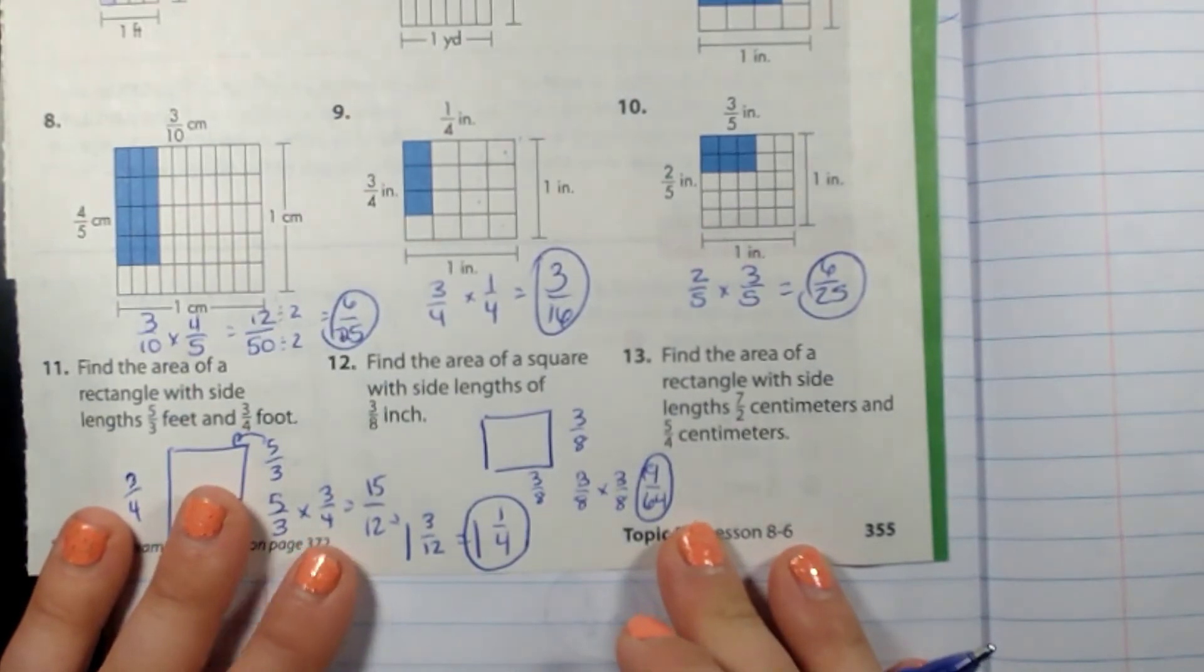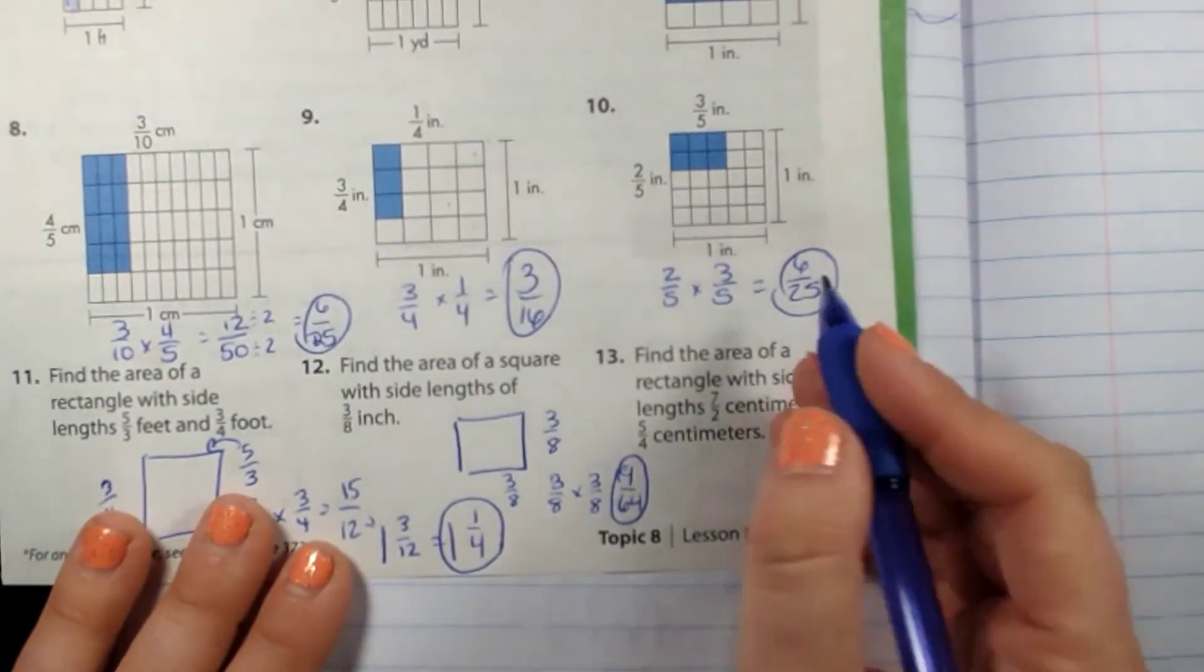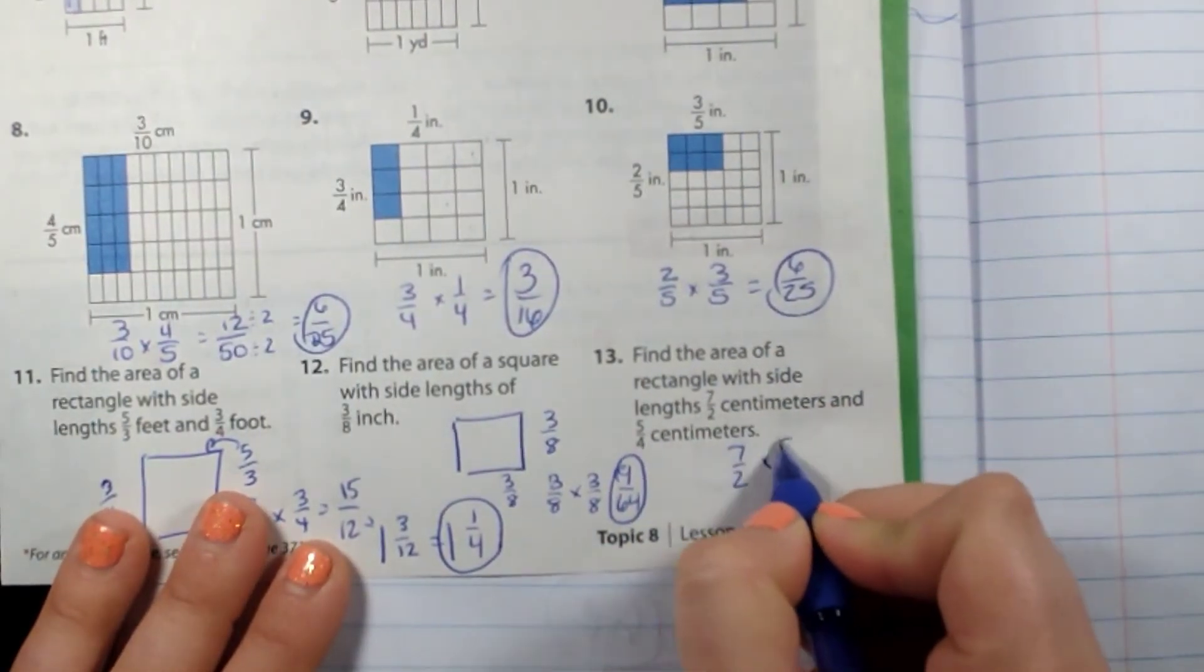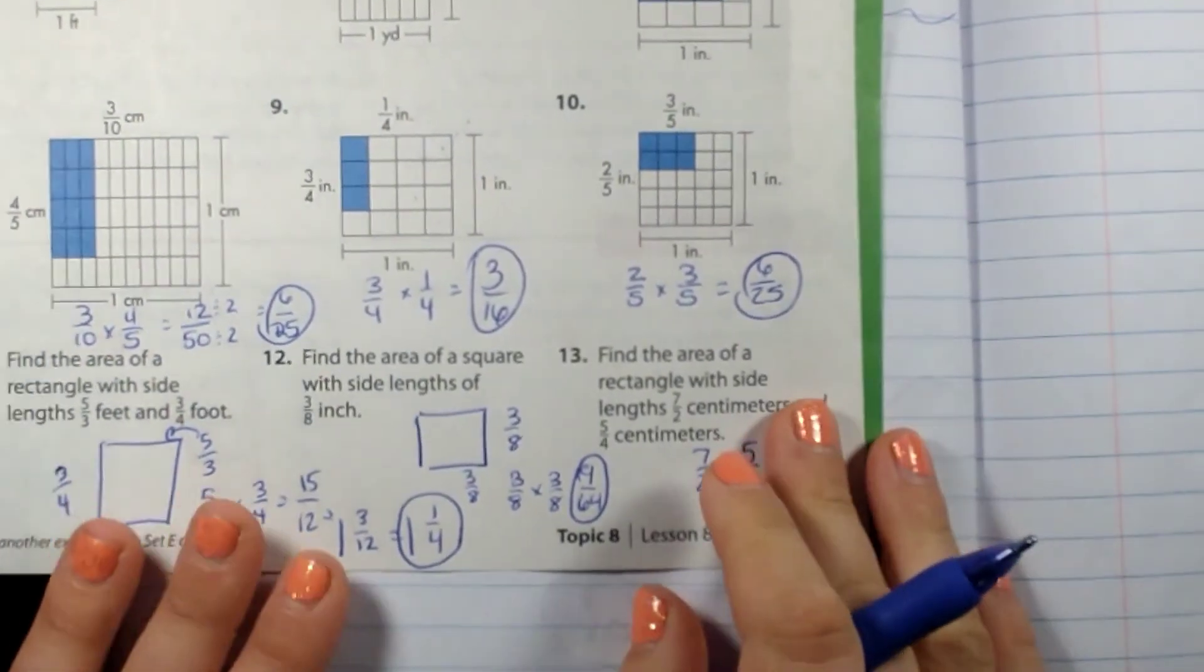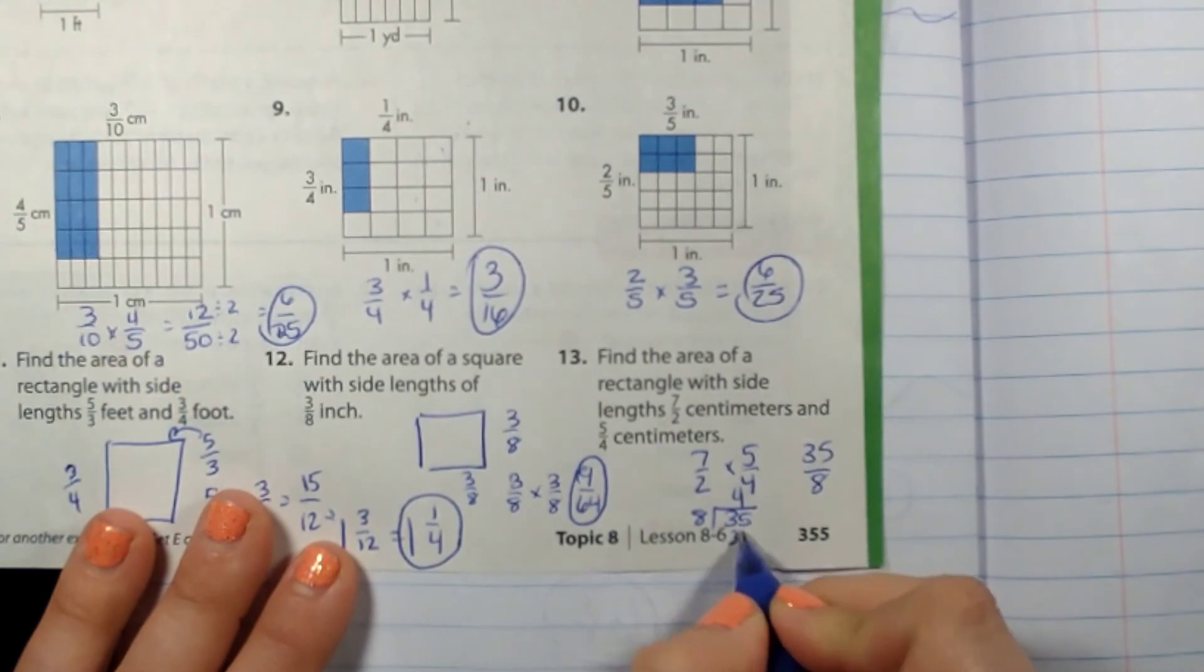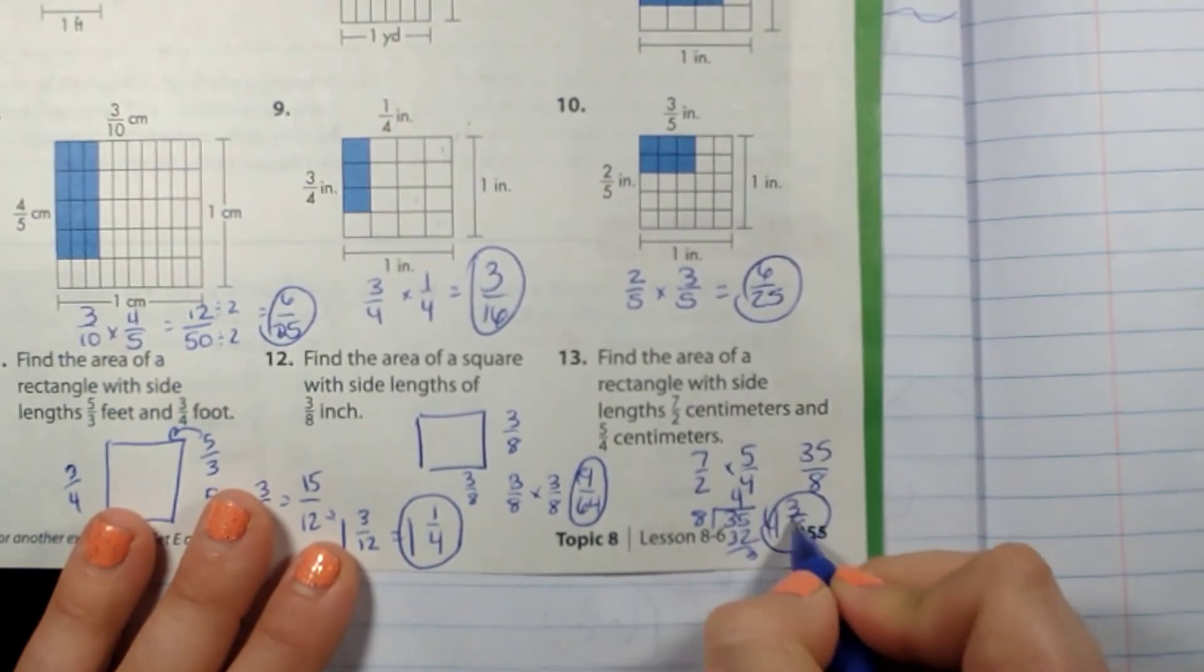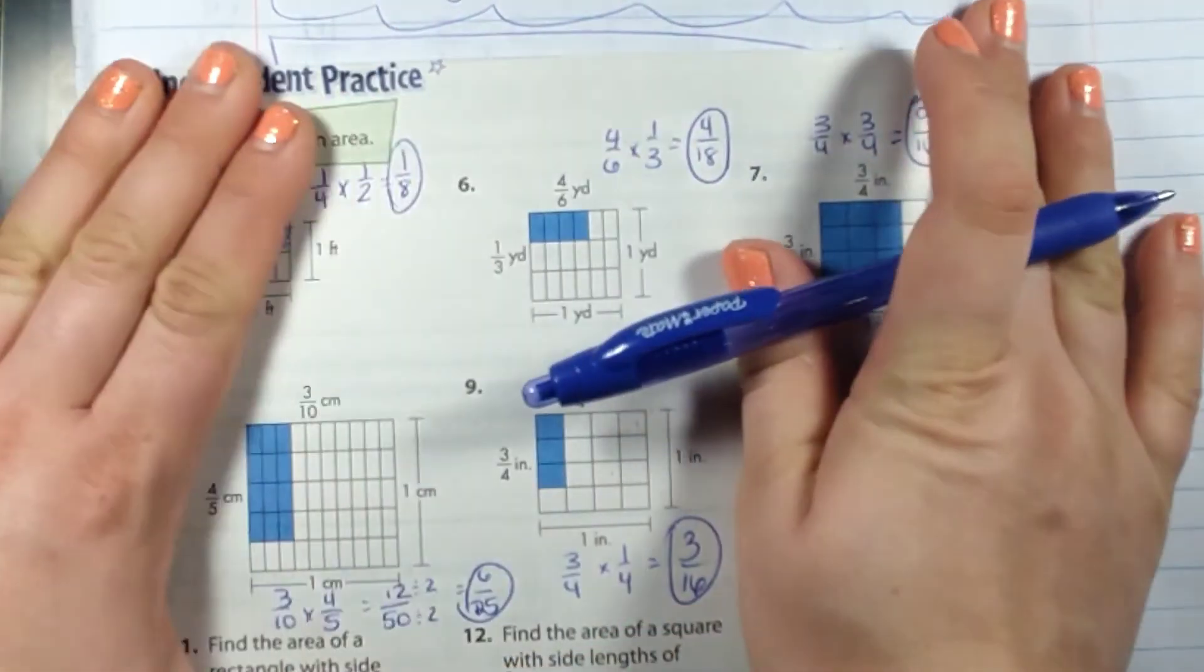That is. Find the area of the rectangle with the side lengths of seven halves and five fourths—thirty-five over eight, and then we have to solve how many times does that go in there. Four, so four and three eighths. There we go, so that is going to be your practice for the area.